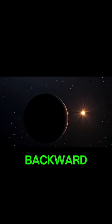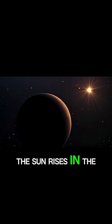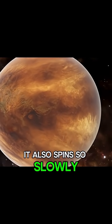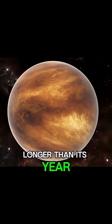Fact number two: Venus spins backward. The sun rises in the west and sets in the east. On Venus, it also spins so slowly that a single day is longer than its year.